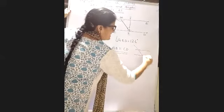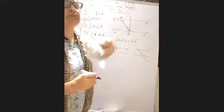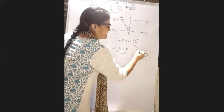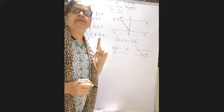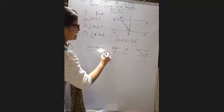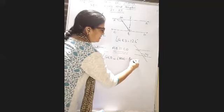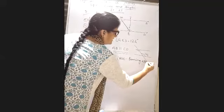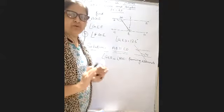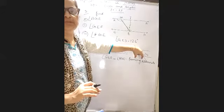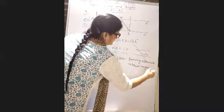If this transversal intersects two parallel lines, and this whole angle GED is given as 126 degrees, then angle AGE must also be 126 degrees. Why? Because they are forming alternate interior angles. So you write: angle GED equals angle AGE, forming alternate interior angles. You must write the reason — without the reason, writing angle AGE equal to 126 degrees alone is wrong.